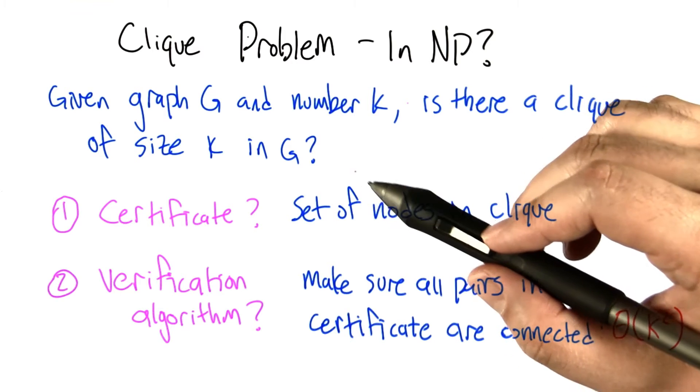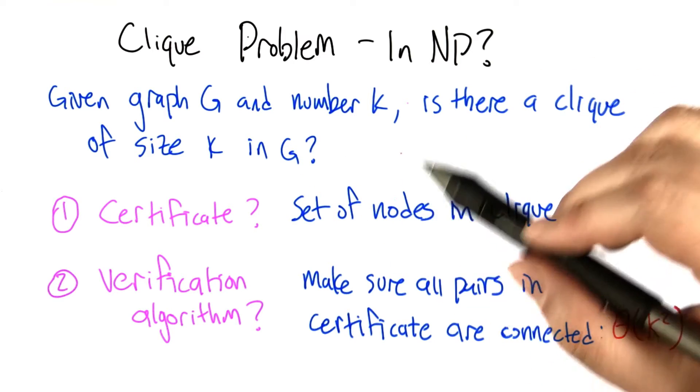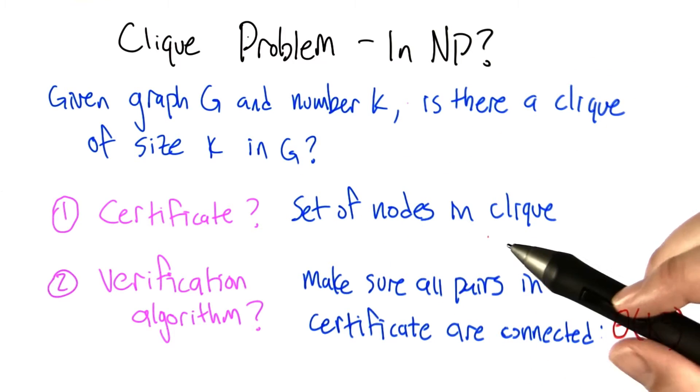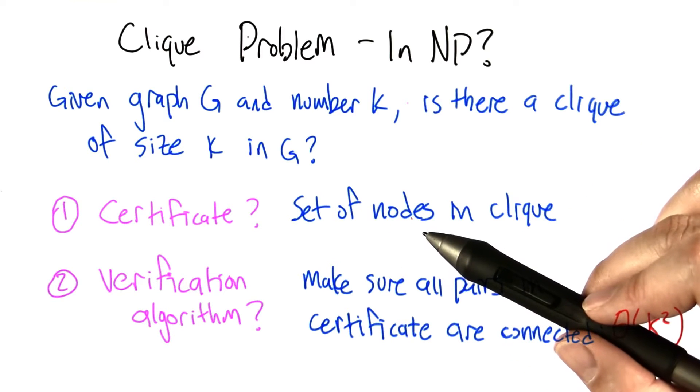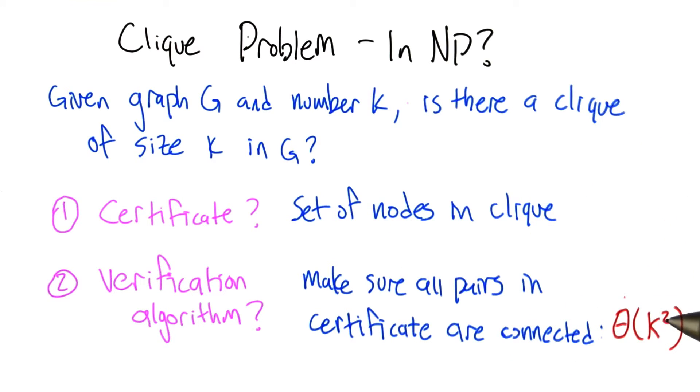For each one, you just have to ask the question: is this pair an edge in the graph? Each of those tests takes constant time, and there's order big theta of k squared pairs to check. So this verification algorithm runs in polynomial time.